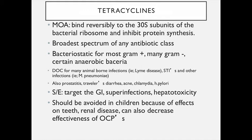Tetracyclines represent the broadest spectrum of any antibiotic class — effective against many gram-positives, many gram-negatives, and some anaerobes. Tetracycline is the drug of choice for many animal-borne infections including Lyme disease and Rocky Mountain spotted fever. It's also effective against chlamydia, which is a common sexually transmitted infection, mycoplasma pneumonia, and cholera to some degree. It's particularly useful for infections caused by spirochetes and rickettsiae.